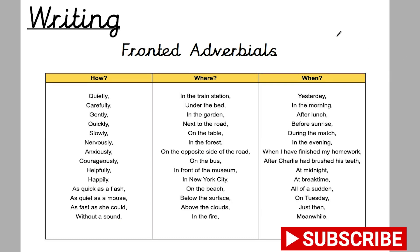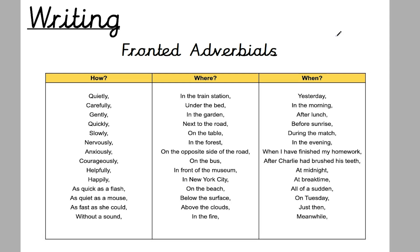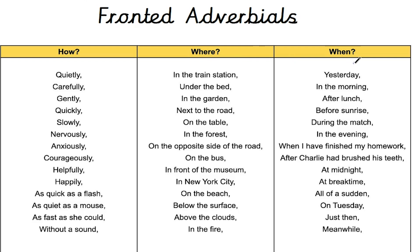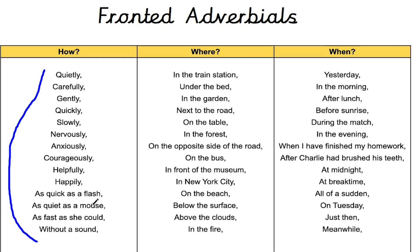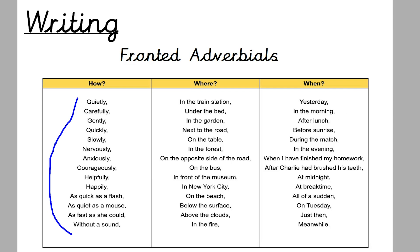Fronted adverbials — what are they? Essentially they were previously known as sentence starters. They're used at the beginnings of sentences and can describe how something is done, where it's happening, or when it's happening. In year two they might have had 'next,' 'after,' 'then.' Now we're looking at more sophisticated ones: time examples like 'after lunch,' 'before sunrise,' 'during the match,' 'when I finish my homework'; place examples like 'in front of the museum,' 'on the table,' 'in the garden'; and how examples like 'as quick as a flash, the boy jumped out of the wardrobe' or 'nervously, the boy walked into the head teacher's office.' In year three they should try to use a comma after them, though the occasional missed comma is fine — in year four it needs to be much more accurate.